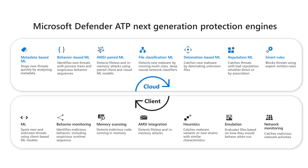Looking at file classification, this is where a neural network of classifiers examines full file contents to provide an additional layer of defense against attacks requiring additional analysis. Suspicious files are held from running and submitted to the Cloud Protection Service for classification — all happening within seconds. Full content deep learning models then produce a classification and send a signal back to the client on whether to allow or block that file, all in real time.